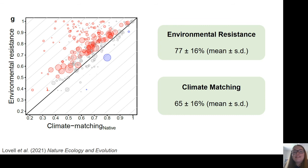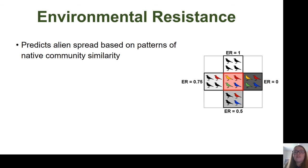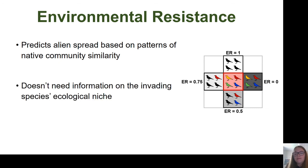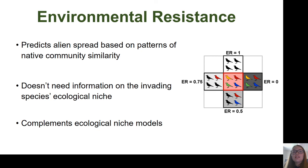Even though climate clearly does shape alien ranges, in practice climate matching can't predict spread because different factors are probably influencing alien and native ranges. We've shown that environmental resistance, which is based on spatial patterns of community similarity, is a powerful predictor of the spread of alien species. It allows the prediction of species for which we know little about, and we hope that the environmental resistance model will be a useful tool that complements existing niche-based models.